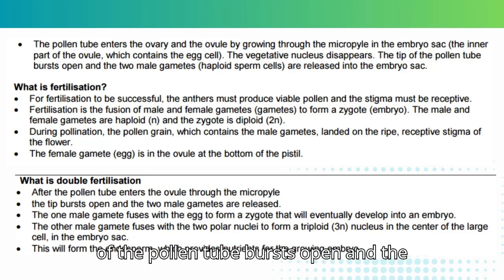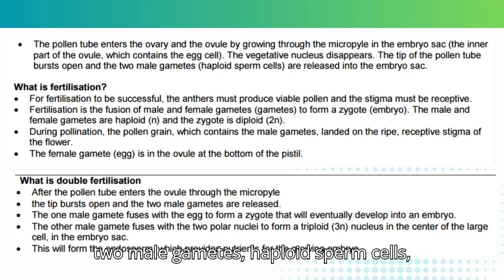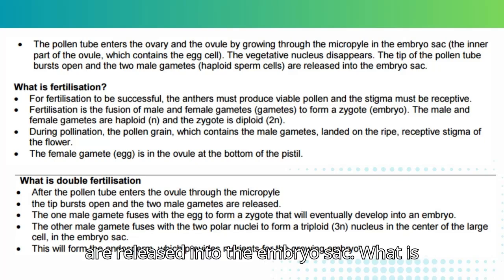The tip of the pollen tube bursts open and the two male gametes, haploid sperm cells, are released into the embryo sac.